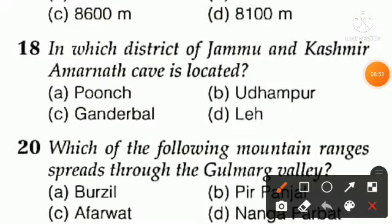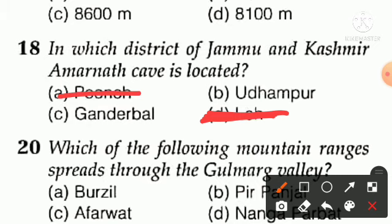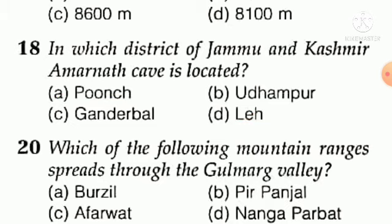Question number eighteen: in which district of Jammu and Kashmir is Amarnath Cave located? Option A — Punch, option B — Udhampur, option C — Ganderbal, option D — Leh. Leh is not the answer, Punch is not the answer. You have to guess — share the answer for Question 18 in the comment section.